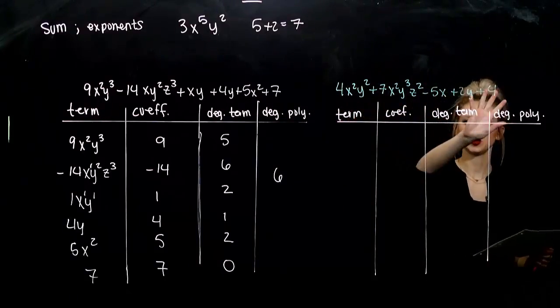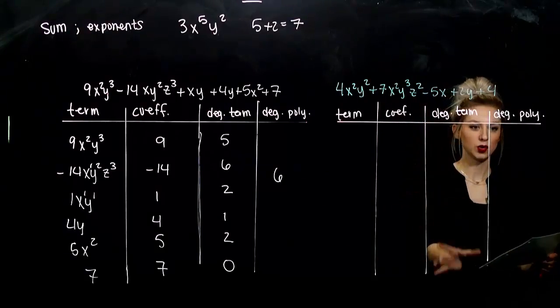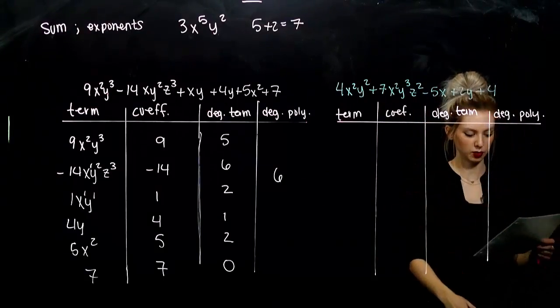So go ahead and take this next polynomial and do the same. Tell me all the terms, coefficients of every term, the degree of every term, and then the degree of the polynomial overall.